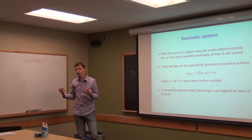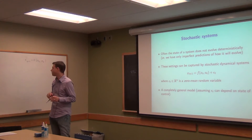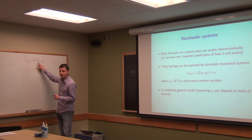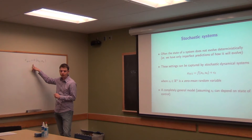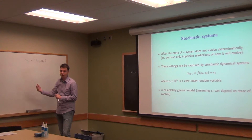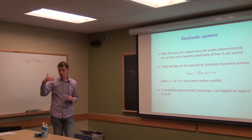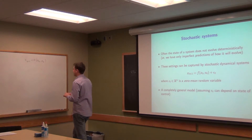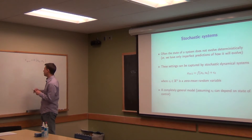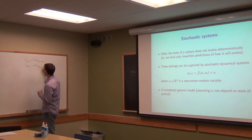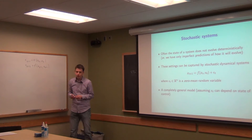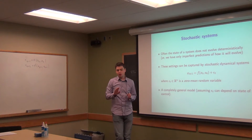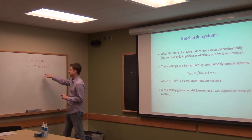If we know the current state and the current control, then we can determine exactly what the next state is. And in fact, we can determine not only the next state, but as many states in the future as we want, by just putting in more and more controls u. This gives us x_{t+1}, and we can get x_{t+2} by plugging into our function x_{t+1} and whatever control u_{t+1}.